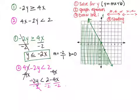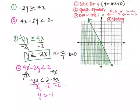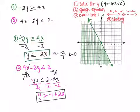The negative 2s cancel on the y side, so y drops down. Notice that I divided by a negative number, so my sign switches. Positive 2 divided by negative 2 gives me negative 1. Negative 4 divided by negative 2 is positive 2x. Now I have y by itself, so I'm ready to do step 2 — graph the equation.